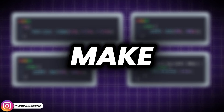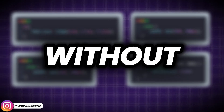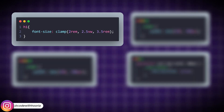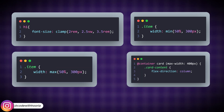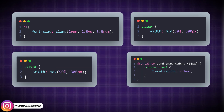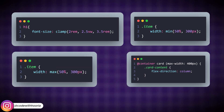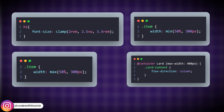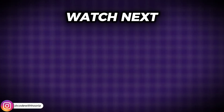And that's how you can make fully responsive websites without a single media query. By using clamp, min, max, and container queries, your layouts will automatically adjust to any screen size — no more guessing, breakpoints, or fixing layout bugs.